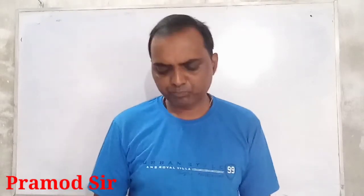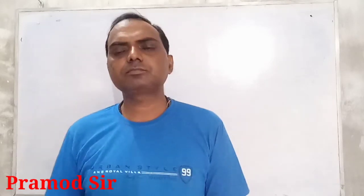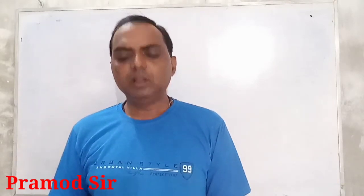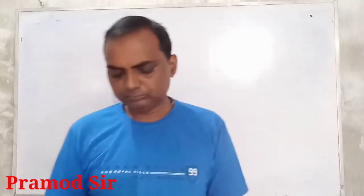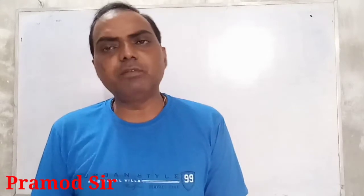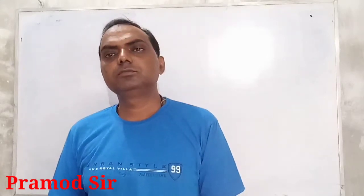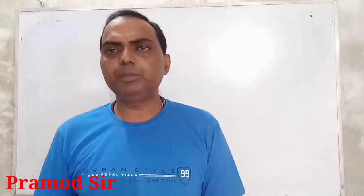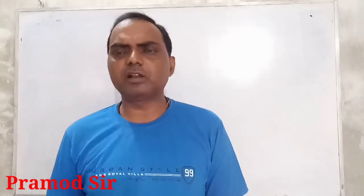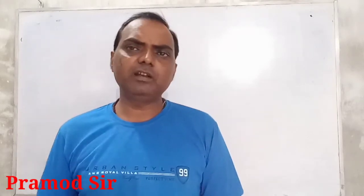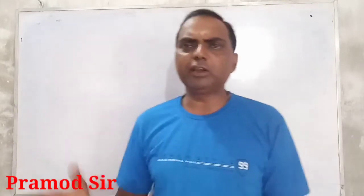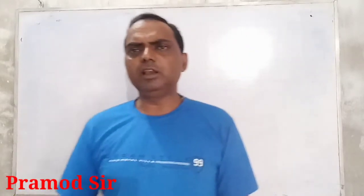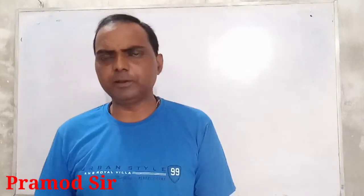Doosra cheez ho gaya — variables. A symbol which may be assigned different numerical values, such as x, y, z, p, q, r, a, b, c, etc. Aani jiska value fixed nahi hai, ise a, b, c, x, y, z, p, q, r, m, n ityaadi letters se represent kar sakte hain.